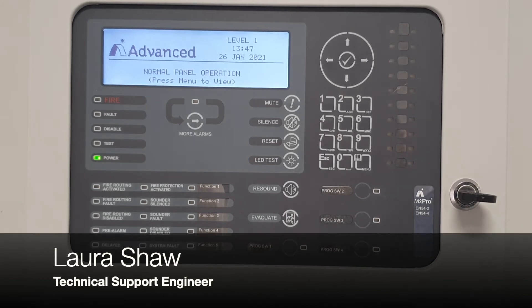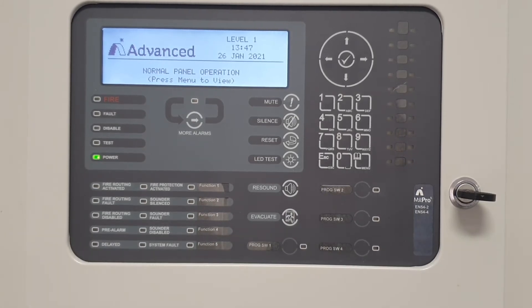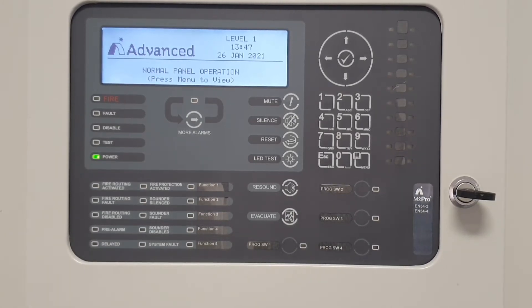On an MX Pro 5, devices can be disabled across the network, but on an MX Pro 4, disablements will not go across the network unless the disablement group has been programmed.